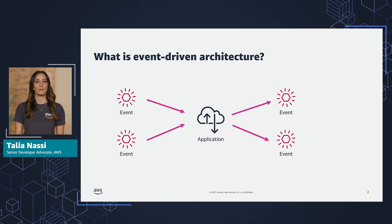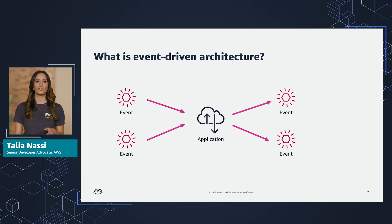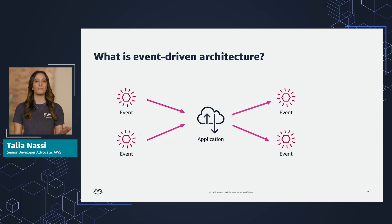One way to think about how an application works is as a system that reacts to events from other places, like from within your application. In this approach, you focus on the system's interaction with its surroundings as a transmission of events. The application receives and creates events, and the inputs and outputs of the application act as events.